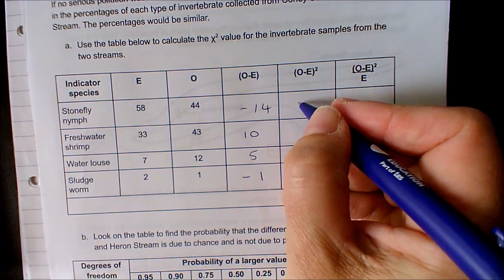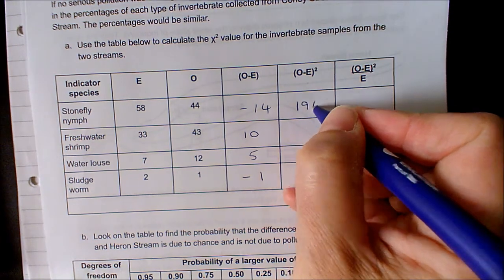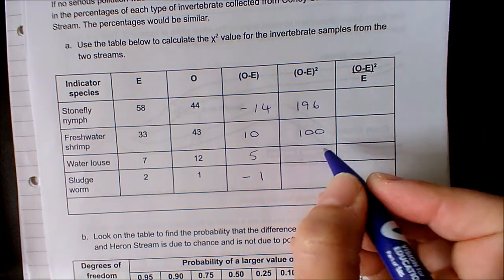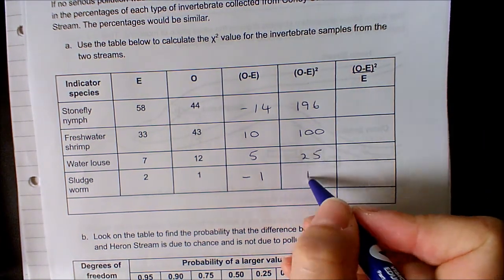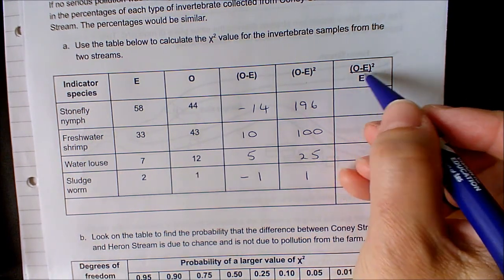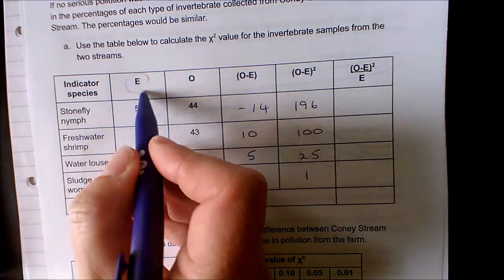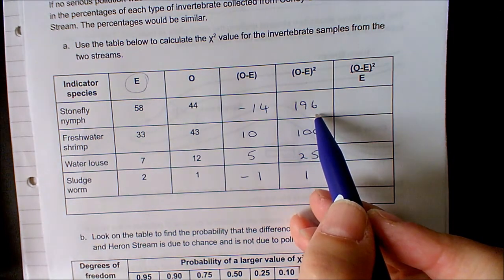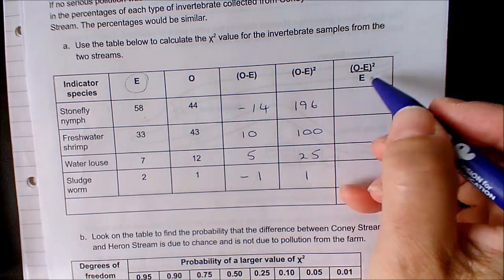Now we square those, so -14 squared is 196, 10 squared is 100, 5 squared is 25, 1 squared is 1. Now we divide that by our E, so 196 divided by 58 gives us 3.38, then 3.03, 3.57, and 0.50.